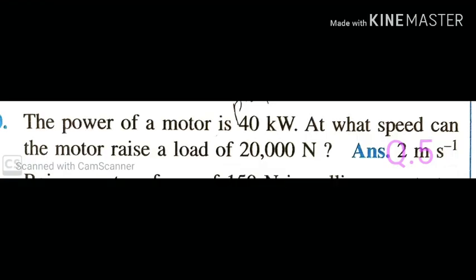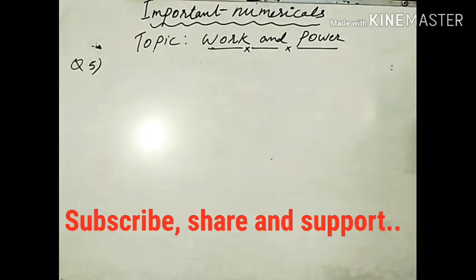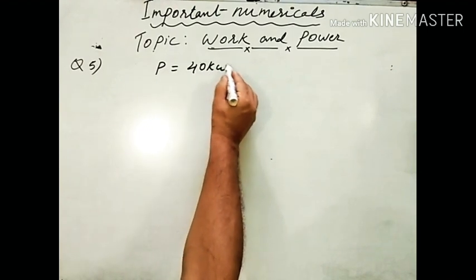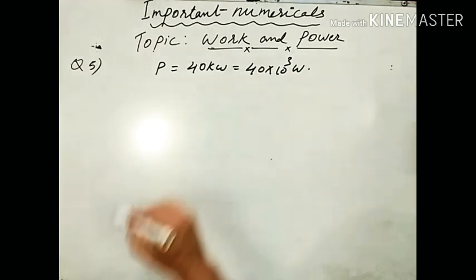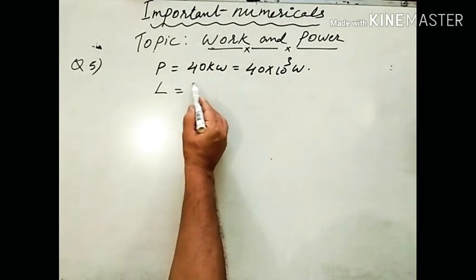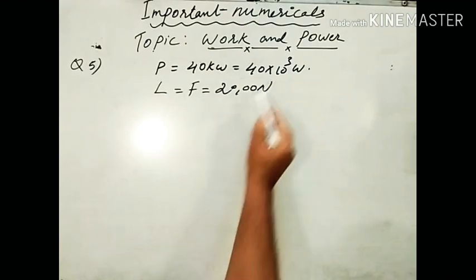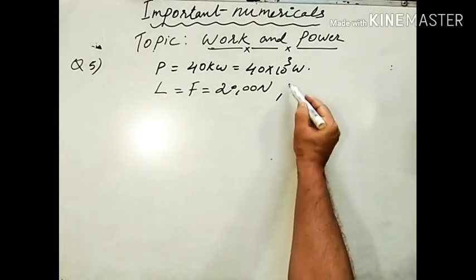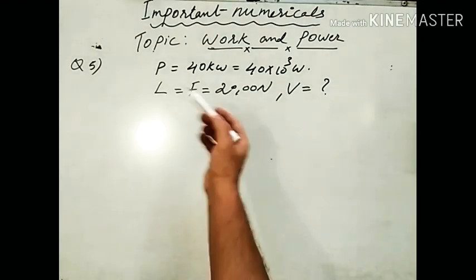The last question: the power of a motor is 40 kilowatt. At what speed can the motor raise a load of 20,000 Newton? Power = 40 × 10³ Watt, force = 20,000 Newton. We need to calculate the speed using the relation between power, force, and velocity.